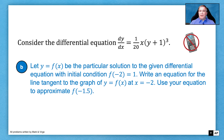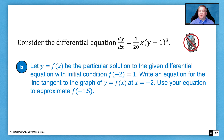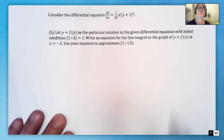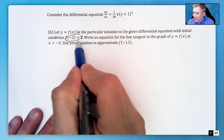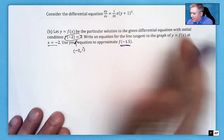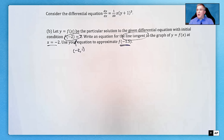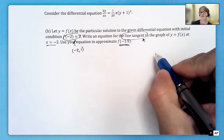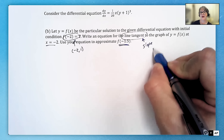For part B, let f(x) be the particular solution to the given differential equation with the initial condition f(-2) = 1. Write an equation for the line tangent to the graph of y = f(x) at x = -2, and use your equation to approximate f(-1.5). So that gives us the point (-2, 1). To write the equation of a line, you're going to want your slope and your point.